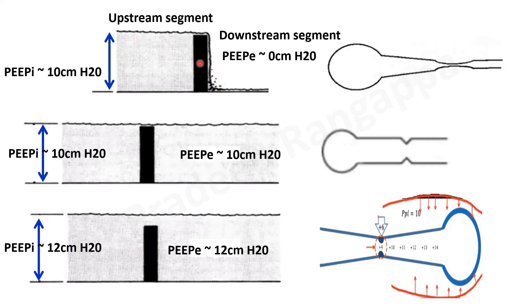To summarize: the concept of time constant and Pride's waterfall helps us determine a safe PEEP in dynamic hyperinflation. Setting extrinsic PEEP at approximately two-thirds to three-fourths of intrinsic PEEP is considered safe. We want to avoid zero extrinsic PEEP — which causes complete airflow limitation due to the waterfall effect — and avoid extrinsic PEEP exceeding intrinsic PEEP — which causes alveolar over-distension. I have covered all physiological aspects of ventilation in NIV and invasive mechanical ventilation; this video specifically addresses the time constant and Pride's waterfall effect. Thank you.